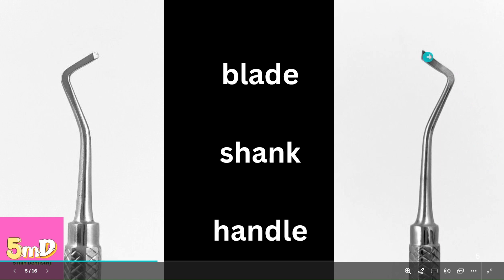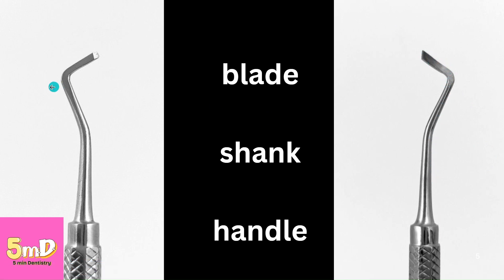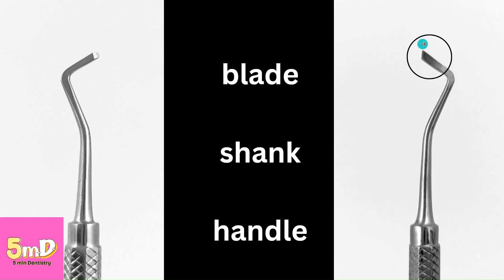This instrument is slightly different from what you see here. What is different? This part — the cutting edge — is curved when compared to the normal enamel hatchet. It is a gingival marginal trimmer, or GMT. This instrument has a three-number formula whereas the enamel hatchet has a four-number formula.